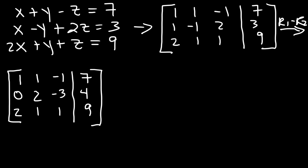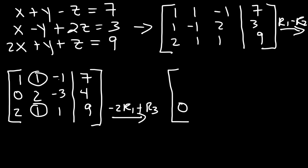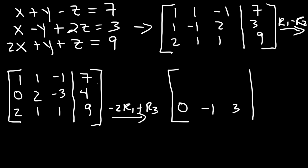Now I need to convert the leading entry of row 3 into a 0. I'll take negative 2 times R1 and add that to R3. Negative 2 times 1 plus 2 = 0. For column 2: negative 2 times 1 plus 1 = negative 1. For column 3: negative 2 times negative 1 is 2, plus 1 = 3. For column 4: negative 2 times 7 is negative 14, plus 9 = negative 5.